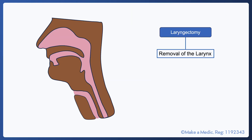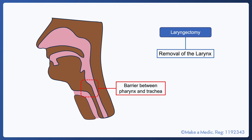Finally, I'd like to briefly talk about laryngectomies. A laryngectomy is a surgical procedure in which the larynx is removed, a barrier is created between the pharynx and the trachea, and a stoma is created to connect the trachea to the skin.